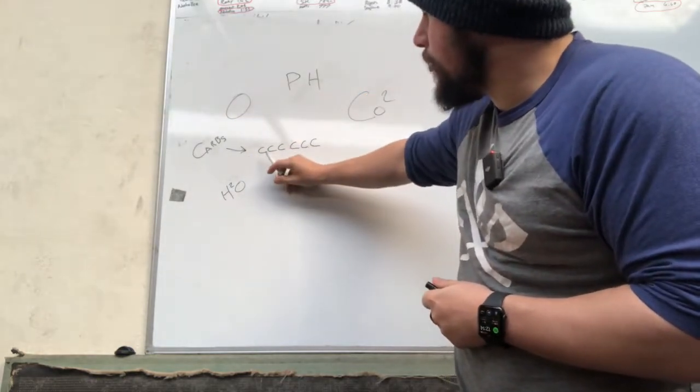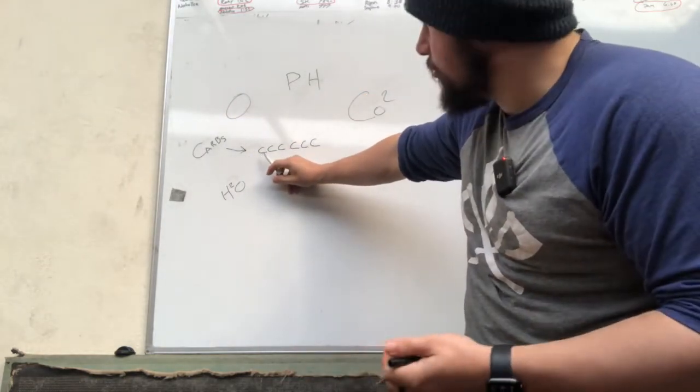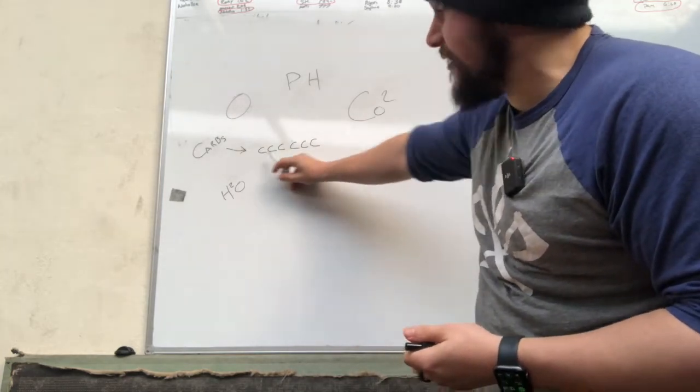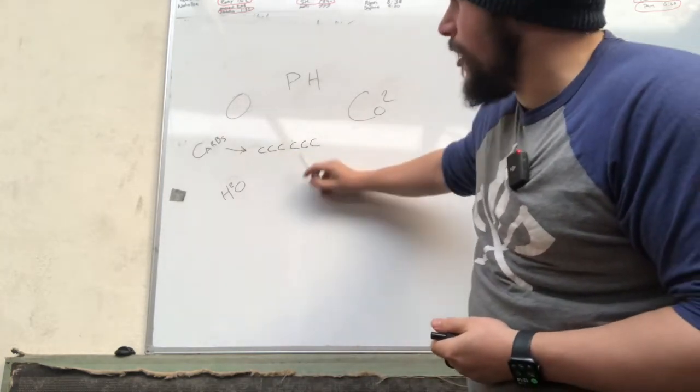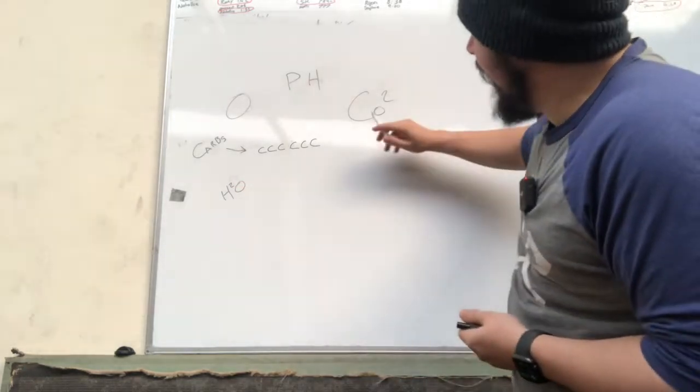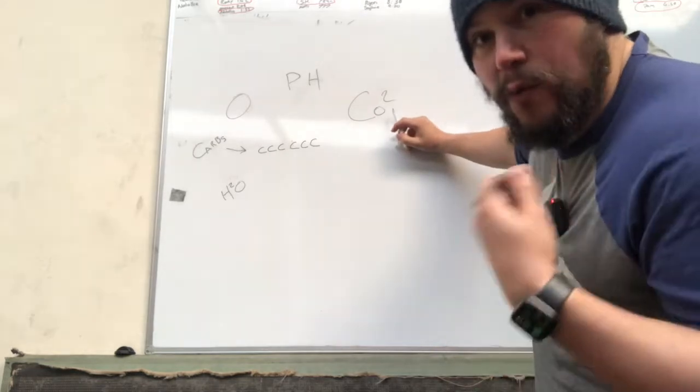When glucose is broken down, or when carbs are broken down into glucose, it's a six carbon chain. That means one, two, three, four, five, six C's in a row. Six carbons. Then we've got H2O - you know what that is, that's water. And then we've got CO2. That's what we breathe out.